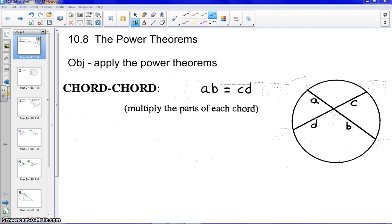Our first power theorem that we're going to go over today is chord-chord. As you can see, we have two chords over here in the circle. They are split up into parts. We have one chord split up in parts A and B. The second one is split up into C and D. To actually solve this, we would take part times part, part of one chord, so that's broken into two parts, equals part times part of the second chord.